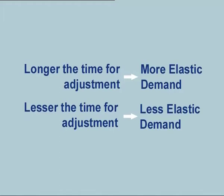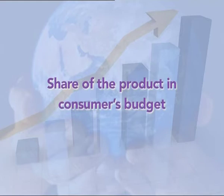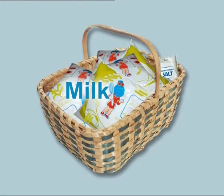Length of Time Allowed for Adjustment: longer the time allowed for adjustment to the change, more is the demand elasticity; shorter the time, lesser is the demand elasticity. When a longer period is available, the consumer has enough time to change the pattern of consumption or search for closer substitutes, making demand elastic. Shorter time available means lesser elasticity. Share of the Product in Consumer's Budget: price elasticity is directly related to the share of consumer's income spent on that product. For example, milk takes a larger share of a housewife's kitchen budget compared to salt, and so milk is comparatively more elastic than salt.